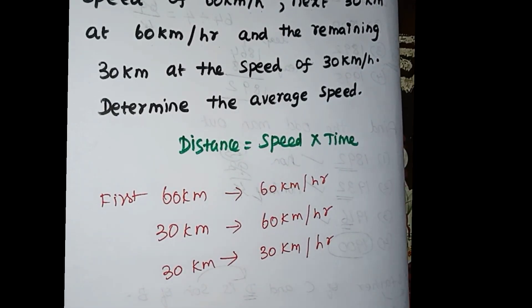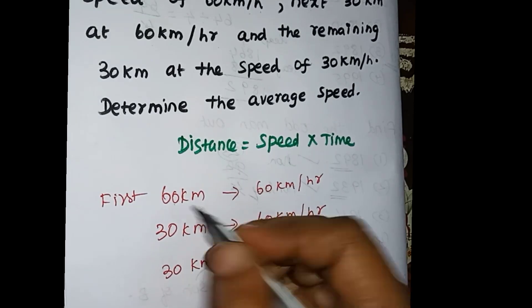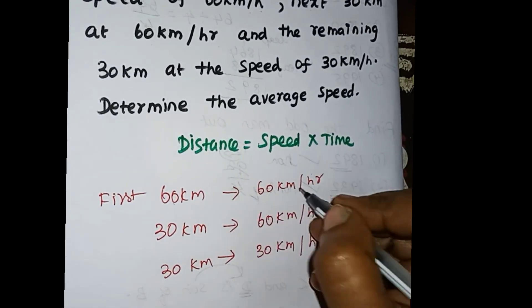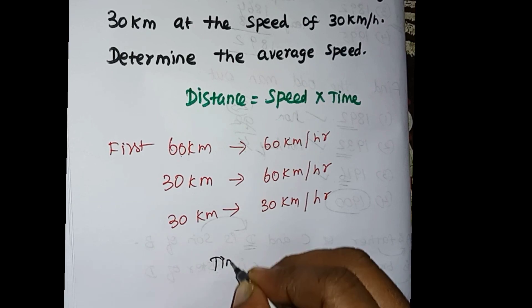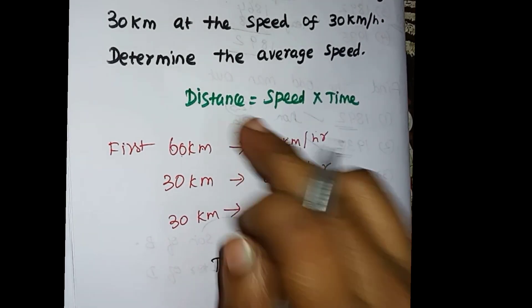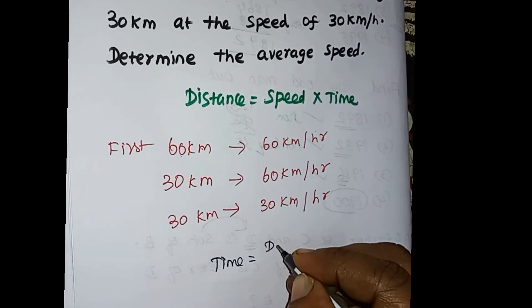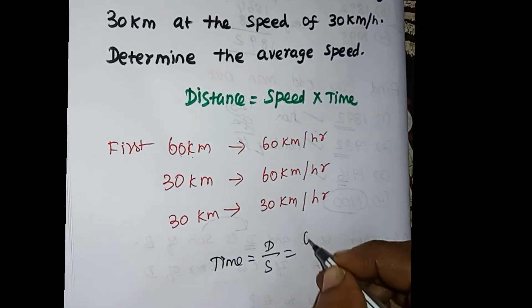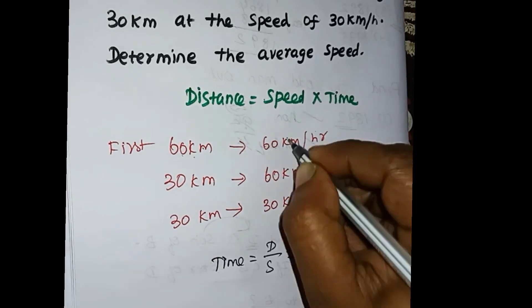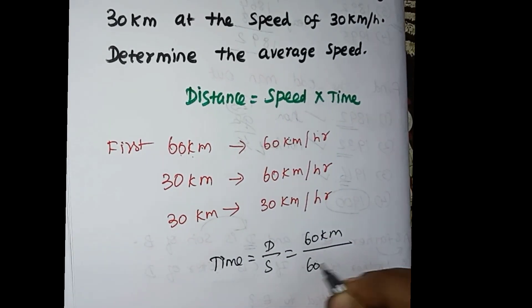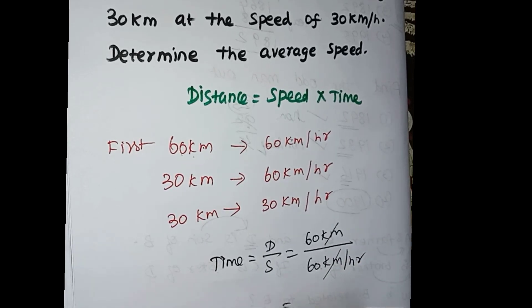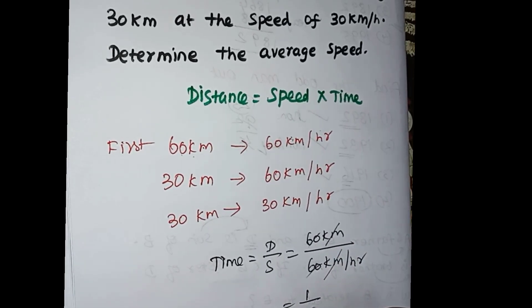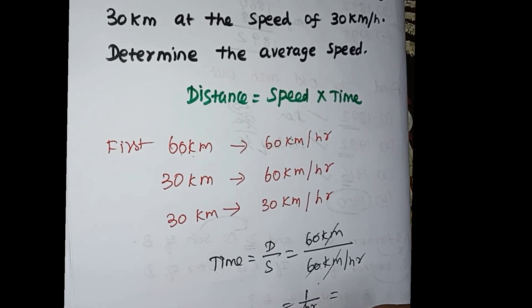We need to solve for average speed. First, we need to calculate the time for each segment. Time equals Distance divided by Speed. For the first 60 km at 60 km per hour, the km cancels and we get 1 hour.